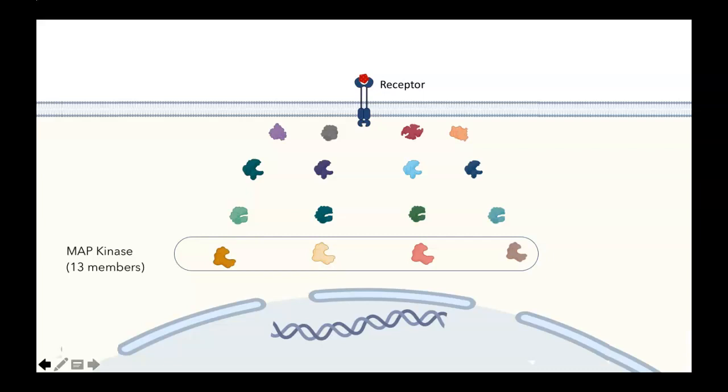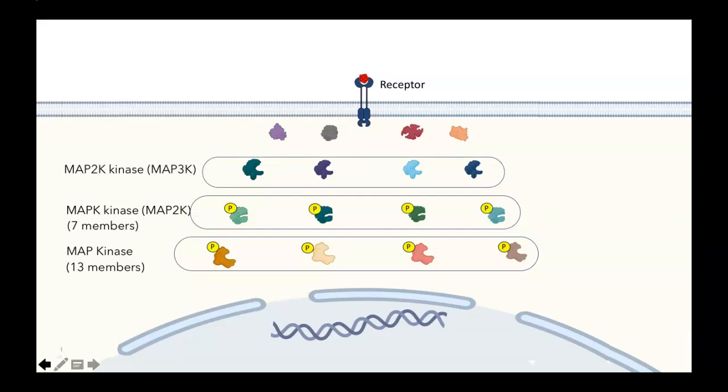These kinases all have the property that they'll be activated when they become phosphorylated. The enzyme that phosphorylates them will also be part of this pathway. These are called the MAP kinase kinase, or MAP2K proteins. There are seven members of this family. They also get activated when they're phosphorylated, and so another layer in these pathways will involve the MAP kinase kinase kinase, or MAP3K. There are 15 members of that family, and these can be activated by other upstream membrane events.